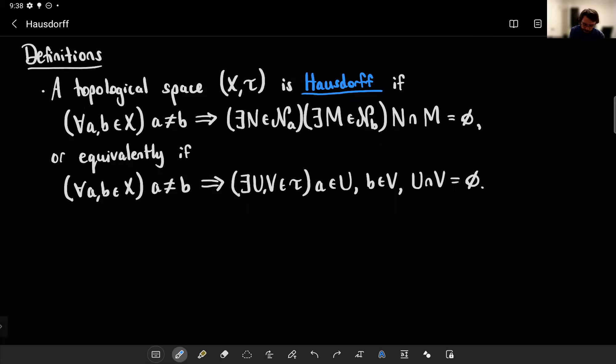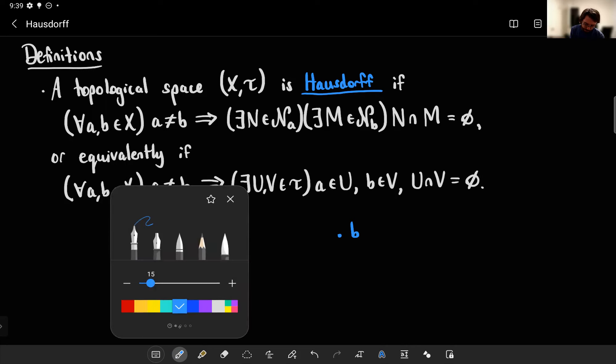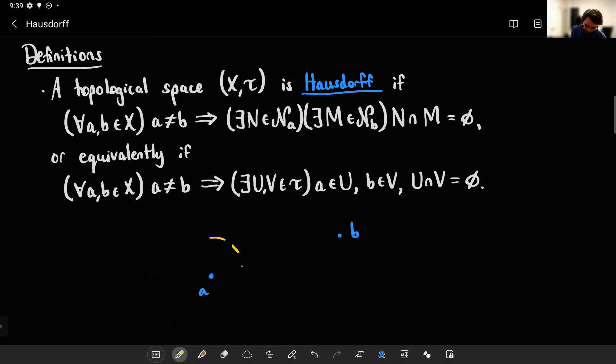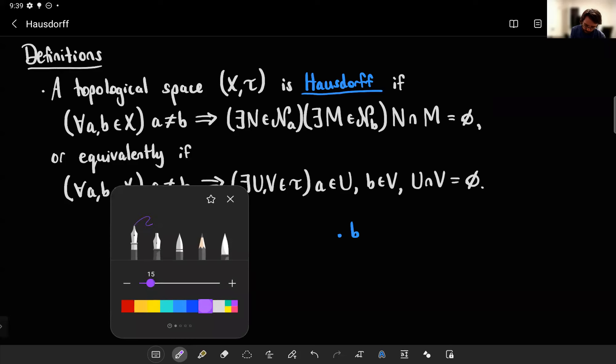The picture here is, imagine you have some points, A and B, existing in some space X. So I'm not even going to draw the space X, just assume it's the ether hiding behind me. Then your space is Hausdorff if you can put some open sets, or some neighborhoods, whatever you like to think. U and V.